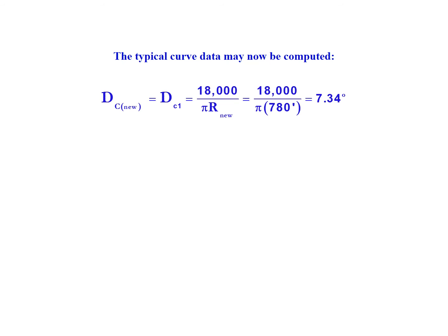Now we can calculate the curve data for each of the individual curves. The degree of curvature for curve 1 is 18,000 over pi times the radius of 780 feet, gives us a DC1 of 7.34 degrees.